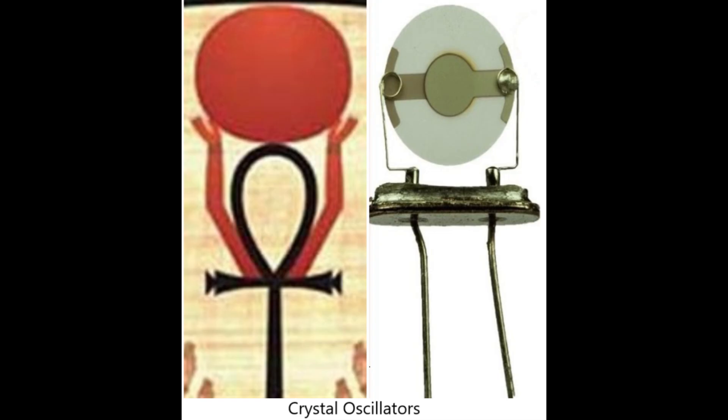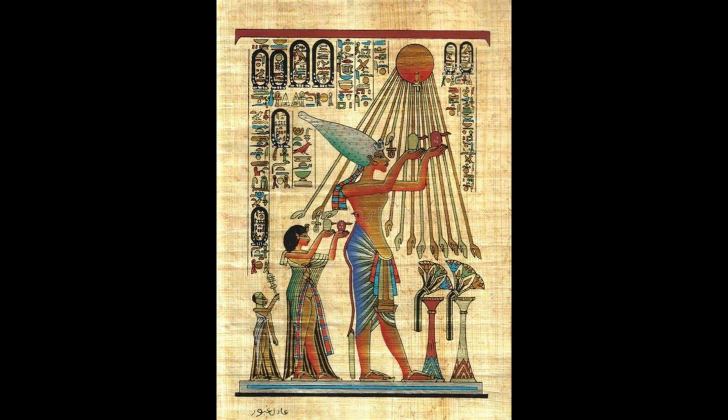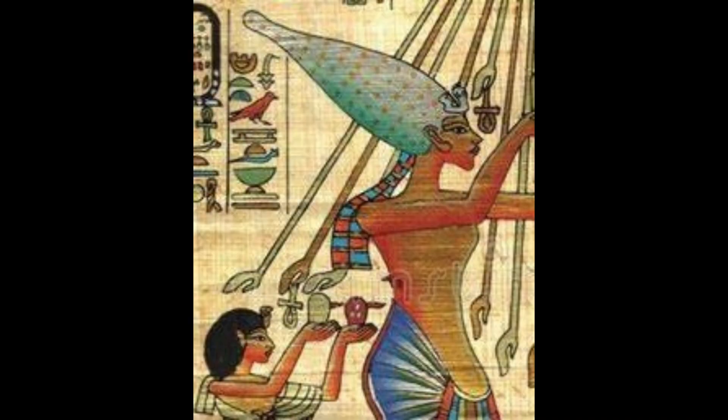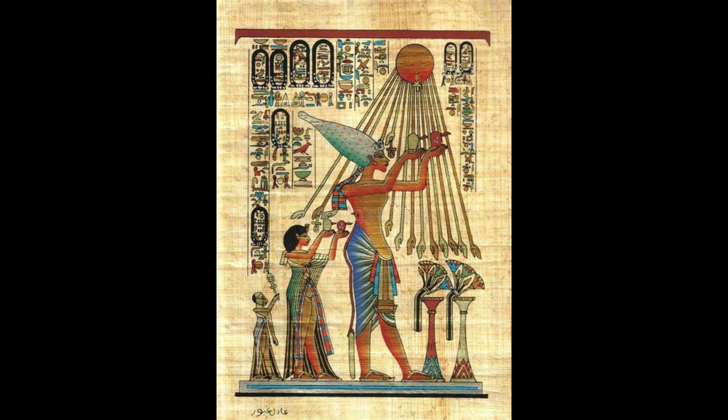The final pair of oscillators I want to look at: if you follow the sun's arms, you'll see that the two tallest people have ankhs in front of their faces, being held by the sun. I think these should be interpreted as solar-powered oscillators, for obvious reasons.